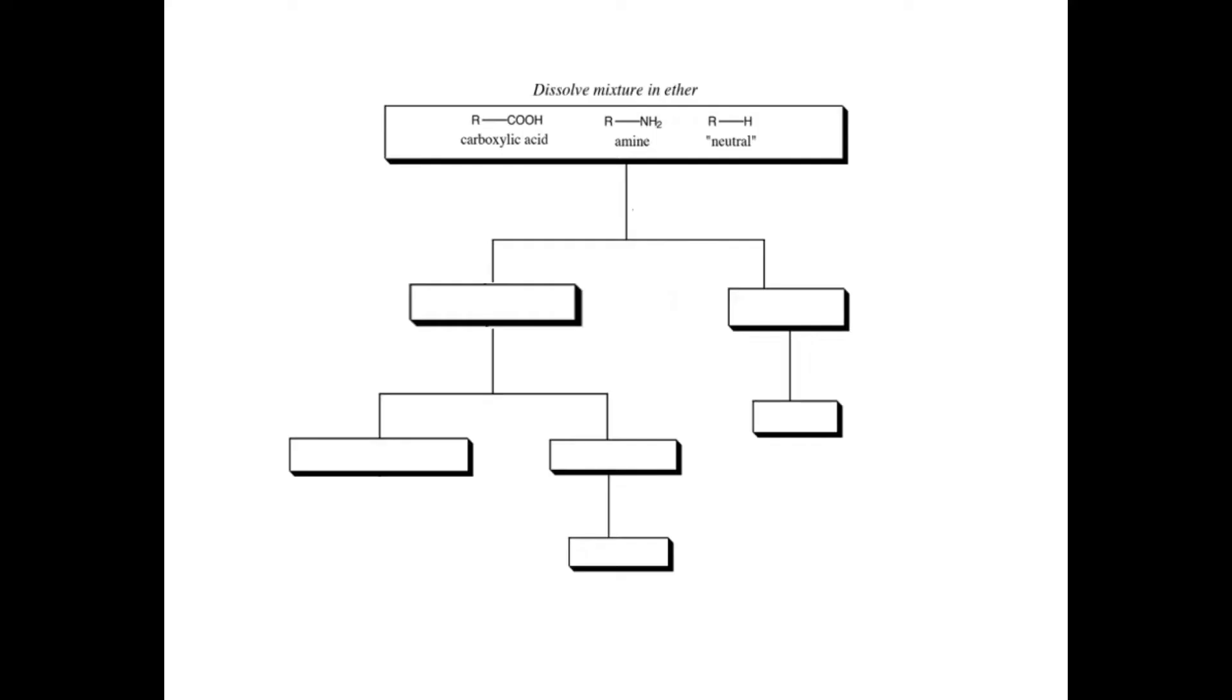So your mixture is going to be carboxylic acid, which is acidic, an amine, which is basic, and a neutral compound. The word extraction means removal. So one at a time, we're going to be removing one of the compounds from the mixture. And we do that based on solubility.